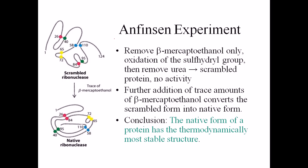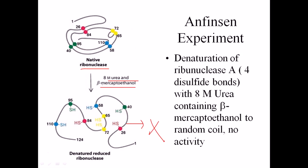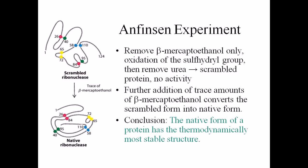The second part of Anfinsen's experiment reveals another conclusion. After using 8 molar urea and beta-mercaptoethanol to denature the ribonuclease, he ran another set of experiments. In this case, he removed only the beta-mercaptoethanol but not the urea. Removing the beta-mercaptoethanol means the SH groups in cysteine residues in the amino acid sequence can interact to form disulfide bonds.